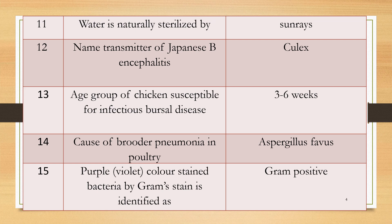Question 12: Name the transmitter of Japanese B encephalitis. This is a frequently asked question. Answer: Culex mosquito.